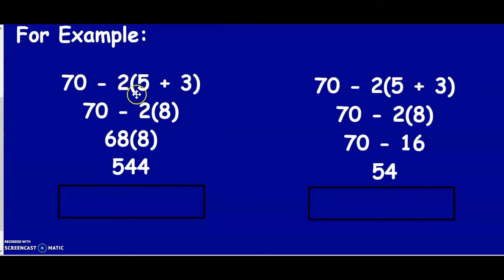Seventy minus two, parentheses, five plus three. We want to do the parentheses first. Five plus three gives us eight. They did this step correctly. When we see a number sitting next to a set of parentheses, this means to multiply. Based on the order of operations, we know that we should multiply before we subtract.